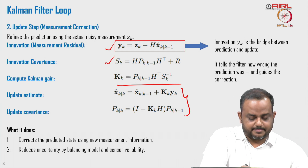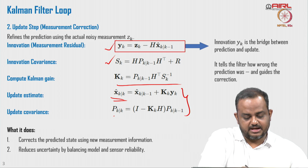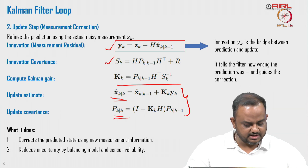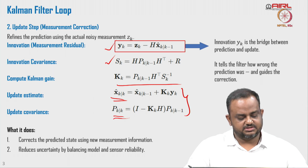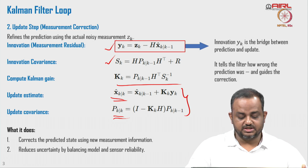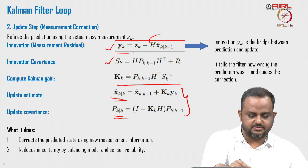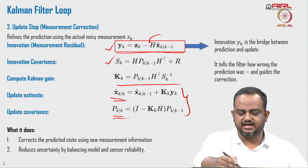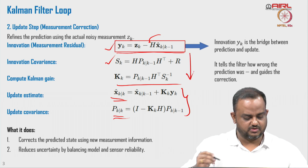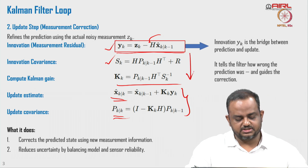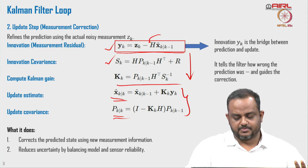Finally, we get the state estimate and the prediction. In the correction step, we correct the predicted state using the new measurement information. This step incorporates the new measurement information into the algorithm and reduces uncertainty by balancing the model and sensor reliability.